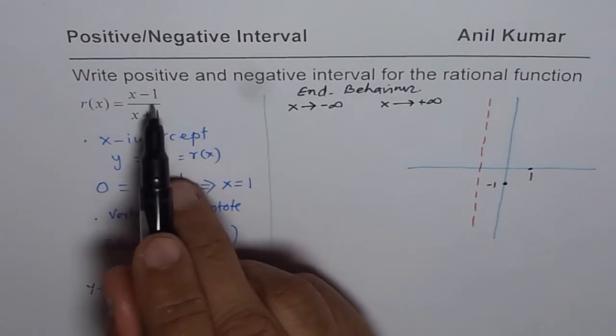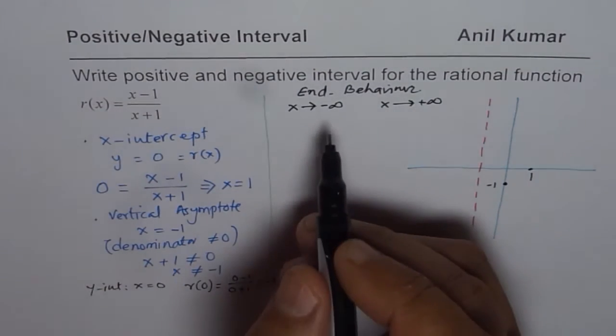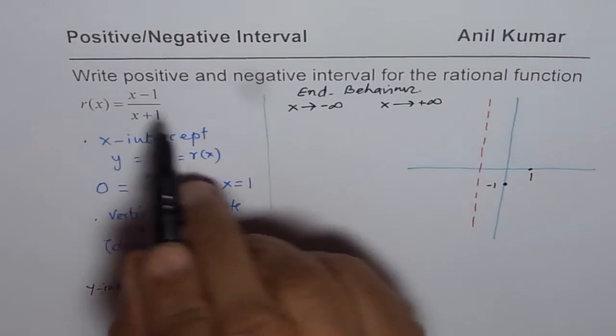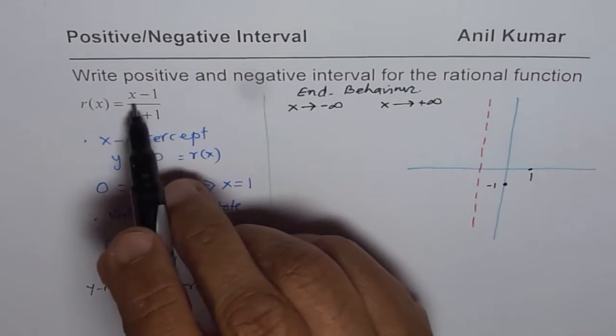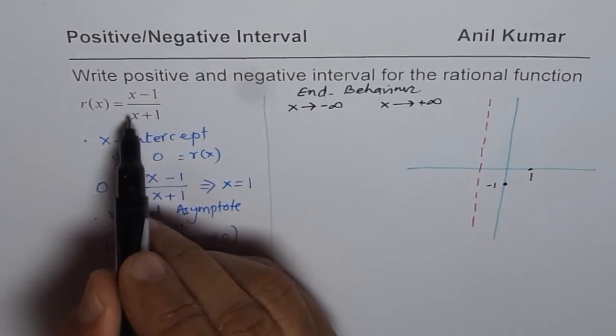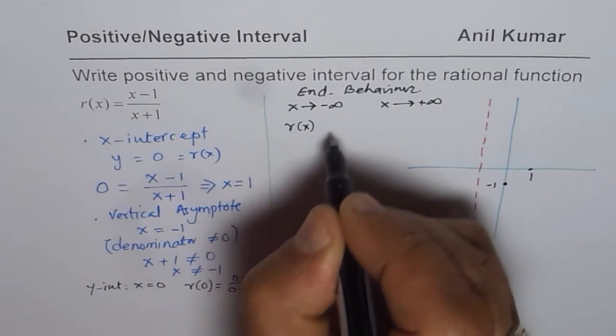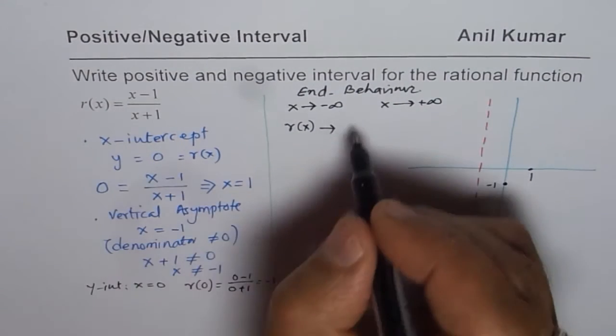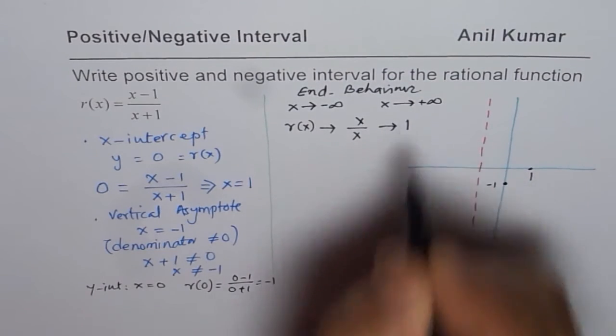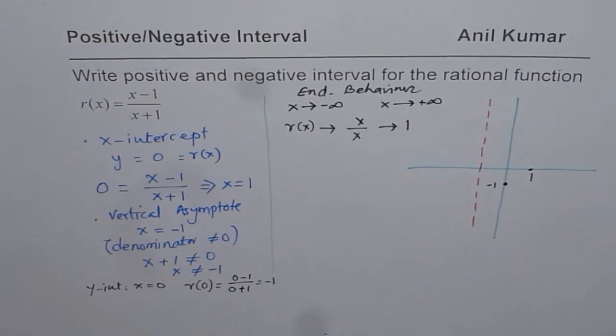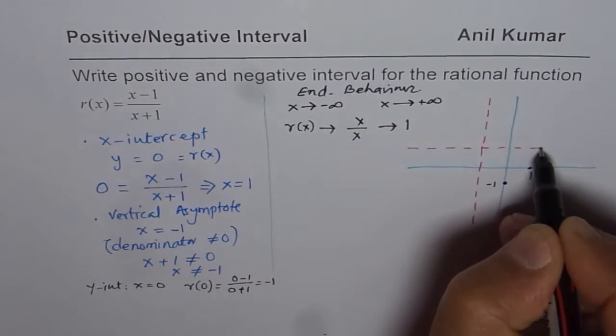It means if x approaches a large value, could be negative infinity or could be positive infinity, what really happens? Now, as compared to 1, even 1000 is very large. So what you can do is you can just think about replacing x with 1000 positive and 1000 negative. So what you observe here is that if x is very large, then 1 is small. So you can say that the function r(x) will approach x divided by x, which is 1. So that means it approaches 1. So we get a horizontal asymptote at x equals to 1.